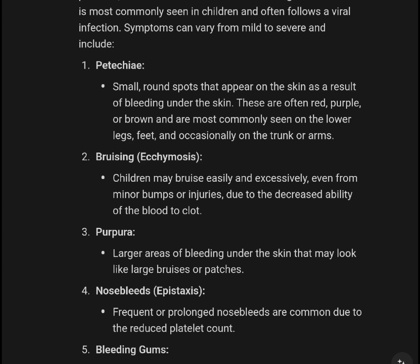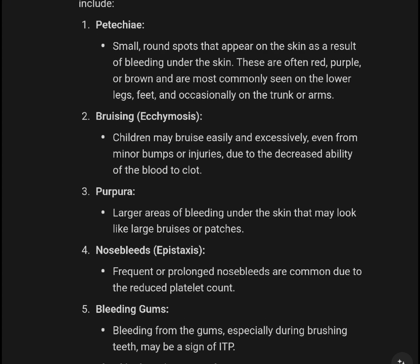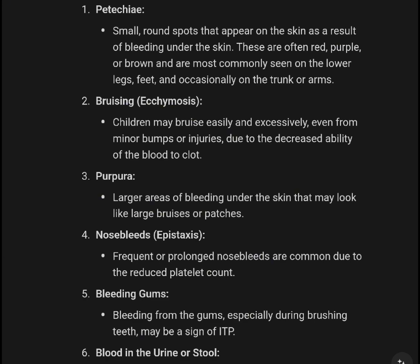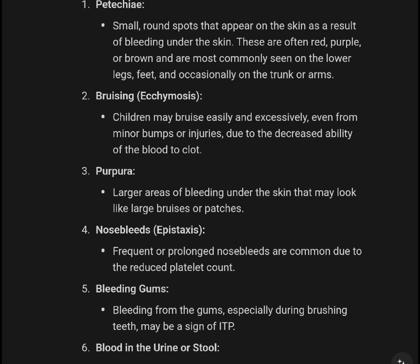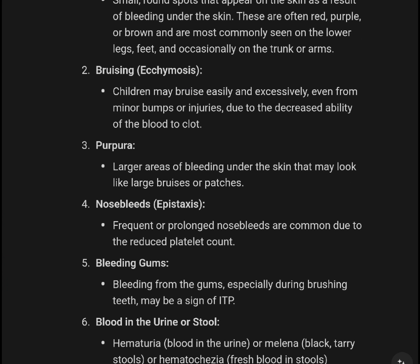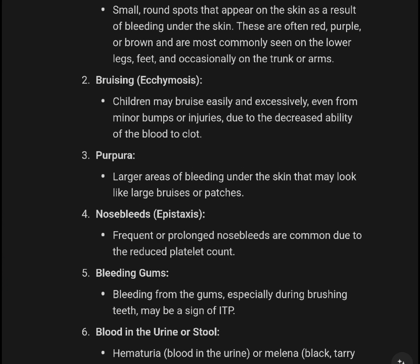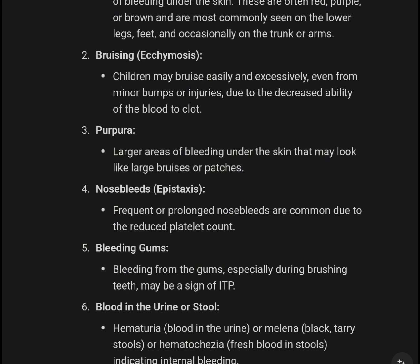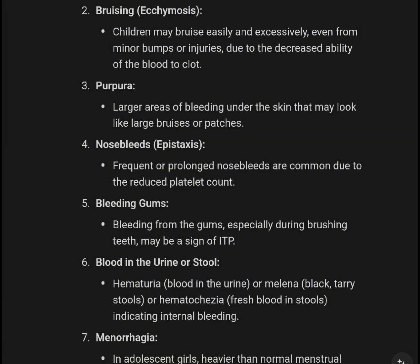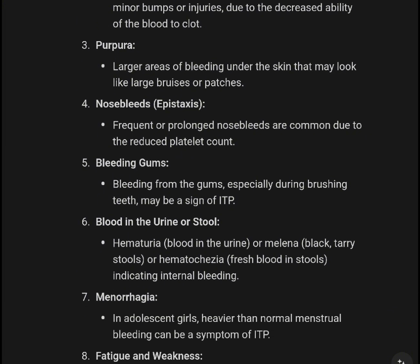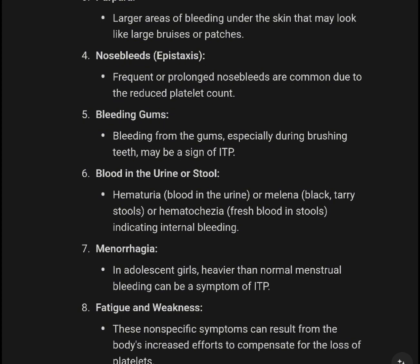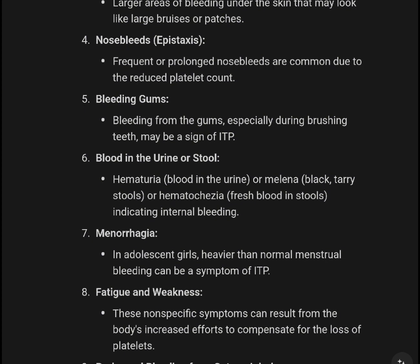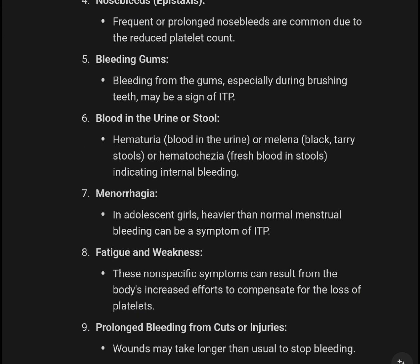Symptoms can vary from mild to severe and include petechiae — small round spots on the skin resulting from bleeding under the skin. These are often red, purple, or brown and are most commonly seen on the lower legs and feet. Bruising and ecchymosis are also common; children may bruise easily even from minor bumps due to decreased ability of blood to clot. Nosebleeds (epistaxis) — frequent and prolonged — are common due to the reduced platelet count.